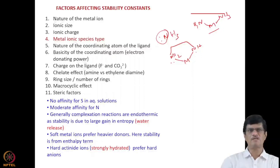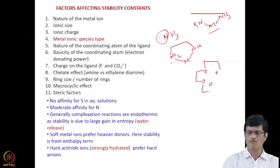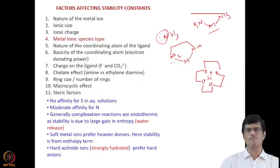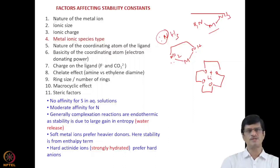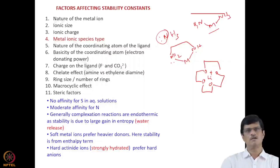There is also the macrocyclic effect. For example, 12-crown-4 forms a very strong complex with lithium ion due to this effect. Additionally, steric factors play a role: if the ligand has functional groups with bulky side chains affecting the approach of the donor atom to the metal ion, these steric factors can lower the complex formation constants by hindering complexation.